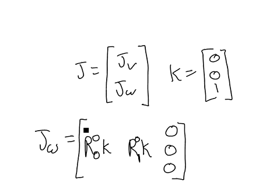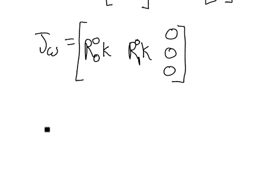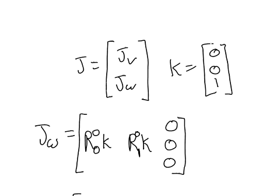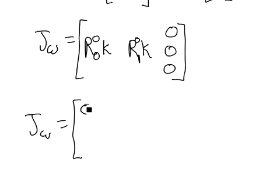Now, let's expand these R, these rotation matrices. The rotation from frame 0 to frame 0 is the identity matrix. So when I take the identity matrix times the vector 0, 0, 1, what I get is the vector 0, 0, 1.